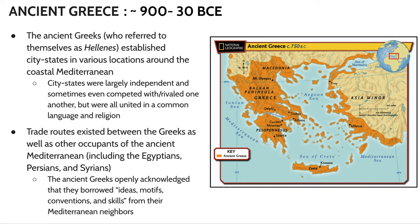Especially when you look at the work from the Archaic period, you can very clearly see these influences from these places manifesting in ancient Greek artwork. It's not really until the Classical period that we're starting to see ancient Greece manifesting its own kind of separate artistic identity.